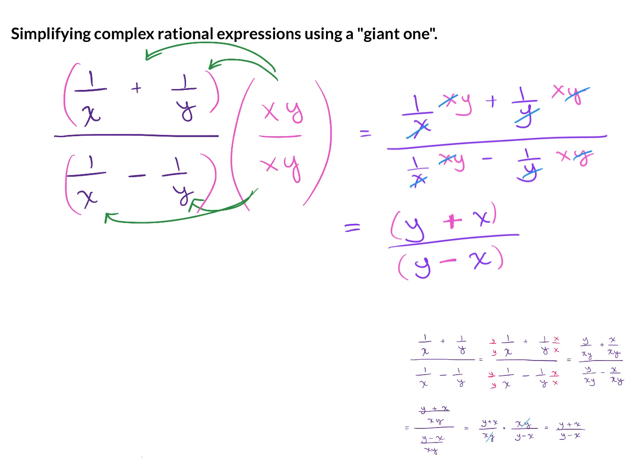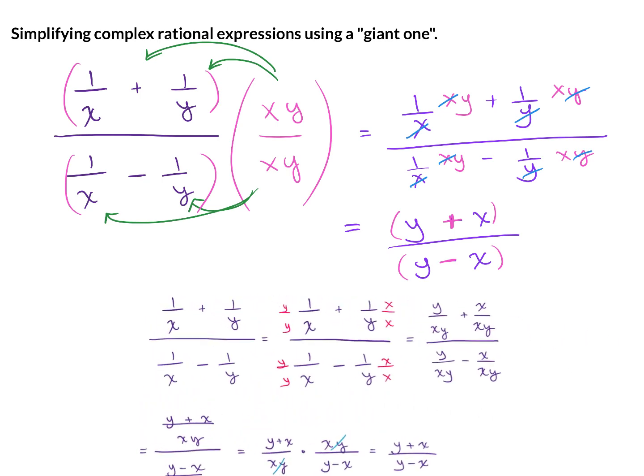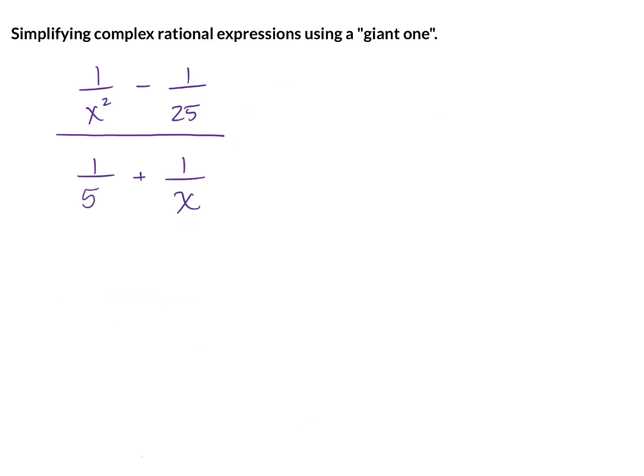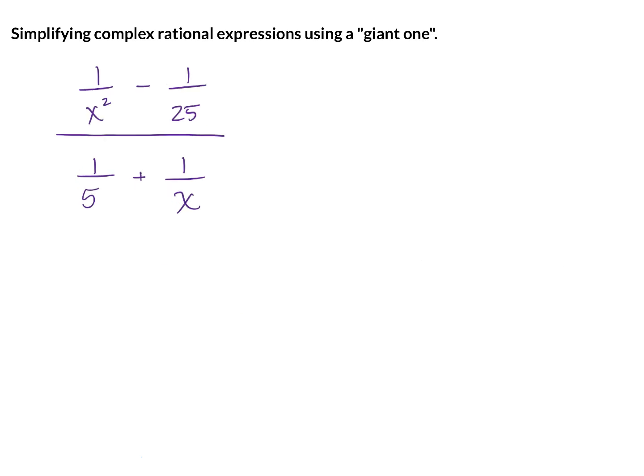So basically, we took this problem that had one step instead of solving it with multiple steps. Now we're going to try one where the LCD in the numerator and the denominator are different to make sure we understand that concept. Here is the traditional method of doing this problem, which takes multiple steps. Now we're going to see how to do it with a giant 1.